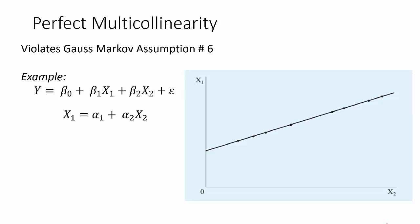Perfect multicollinearity is a violation of Gauss-Markov Assumption 6. If we have perfect multicollinearity, it really means that one of our x variables is a perfect function of one of our other x variables.